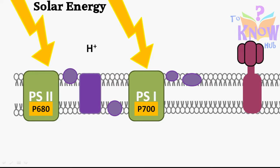There are two systems called photosystems that harvest sunlight. First, photosystem 1, which has a special pair of chlorophyll called P700, because this chlorophyll absorbs light of 700 nanometer wavelength. And the second is photosystem 2, which has a special pair of chlorophyll called P680. It absorbs red light of 680 nanometer wavelength.